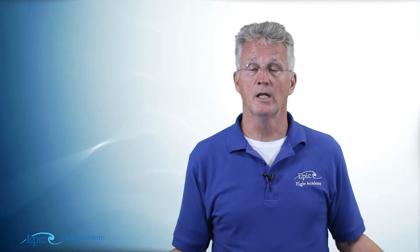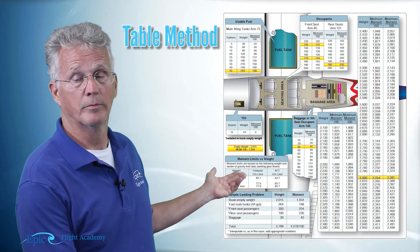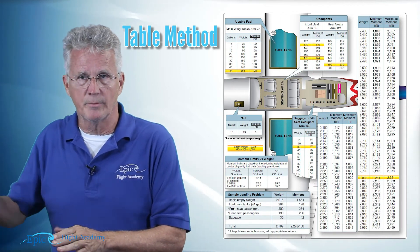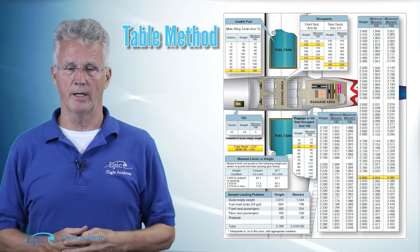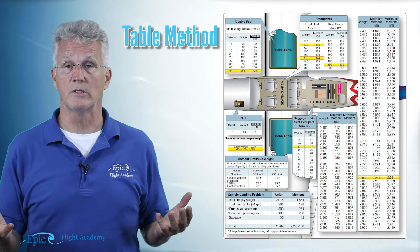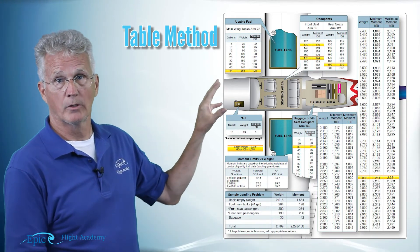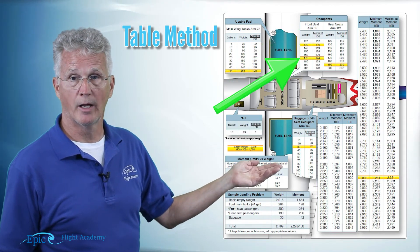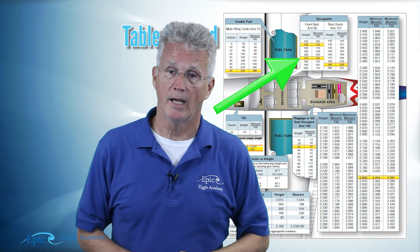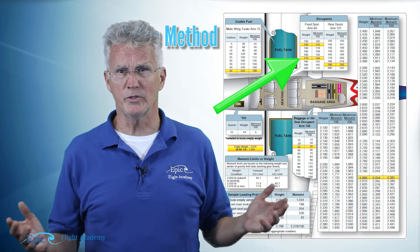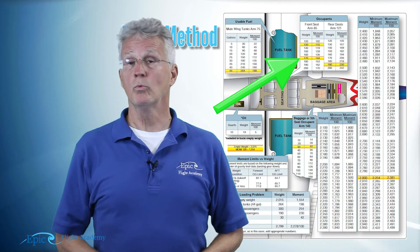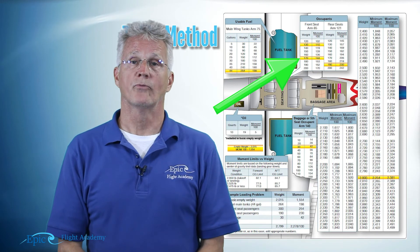The third and final method is called the table method. Just like the name sounds, this one uses a table. Instead of finding a line for the items, we find the table for the items we're talking about. For the front seat occupants, I go to the section that says occupants — let's say one occupant at 130 pounds and one at 170 pounds — and I come straight across on the table to get the moment for those occupants. Just like the computation method, I add up all the moments and all the weights, do a simple calculation, and that gives me the final arm — the center of gravity for that airplane on that flight.